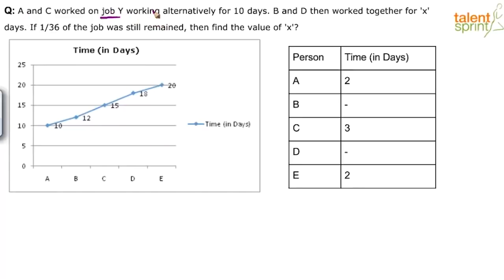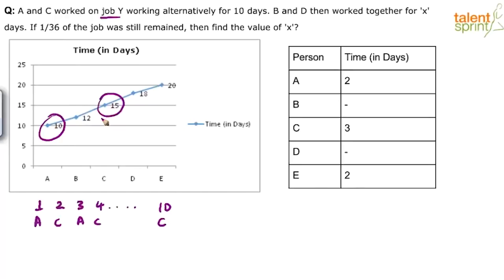So if you see: first, second, third, fourth and so on up to 10 days — A and C have worked alternatively: A, C, A, C and so on, with the final day being C. We know that A can finish job Y in 10 days and C can do it in 15 days. So A does 1/10 on the first day, C does 1/15 on the second day, A does 1/10 on the third day, C does 1/15 on the fourth day — and so on.